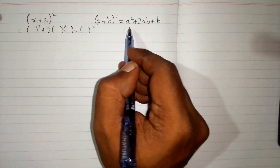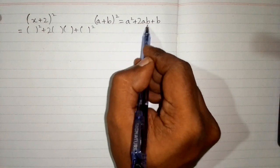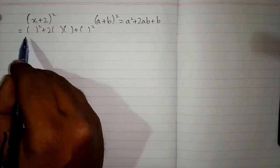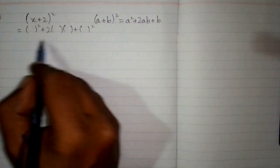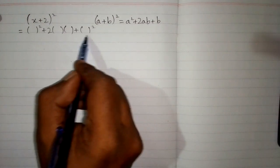So we put brackets in place of this a and this a and this b and this b. So this will be easier for us to use this formula. This is a square plus 2ab plus b square.